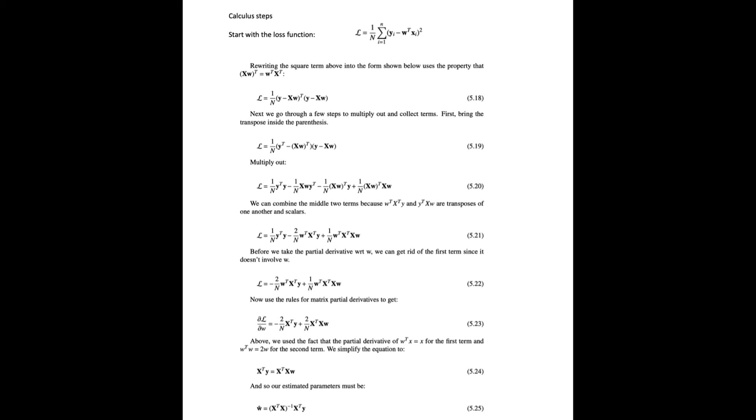These formulas from the book show how to find the partial derivative with respect to w and solve. We start with our loss function. And we want to rewrite that square term as follows.